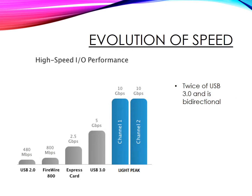Looking at the graph of evolution of speed of the different protocols, USB 3.0 operates at 5 Gbps which is 10 times as good as USB 2.0, whereas Light Peak operates at 10 Gbps which is twice as good as USB 3.0 and is also bidirectional.